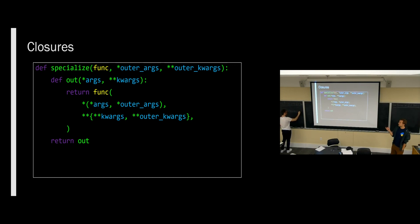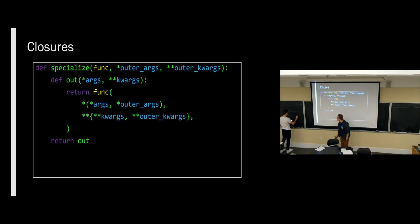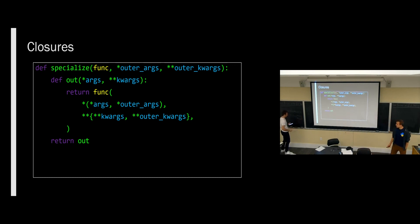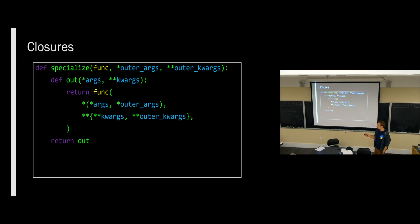The trick is that you have to combine the arguments. We're specializing this function on these arguments by making a new function that combines those arguments with whatever new arguments we get when the function is actually called. The lambda version works since every line of the specialize function is just a one-line operation. But that gets pretty hard to read, so this is a scenario where it's better to just write it out.